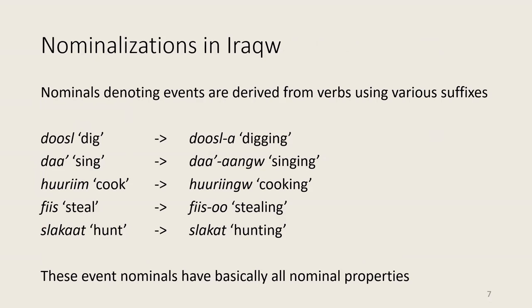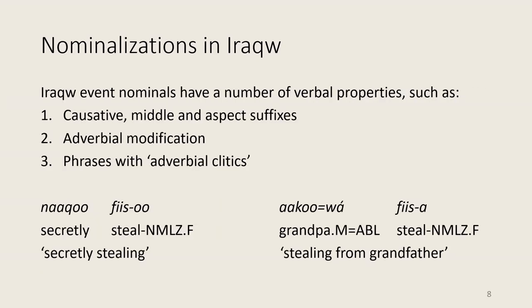So what about nominalizations? In Iraku, you can derive nominals from verbs using various different suffixes. For example, from 'dos,' which means 'dig,' you can derive the noun 'digging' with the suffix, giving 'dosa.' And from 'da,' which means 'sing,' you can get a different suffix and so forth. The resulting event nominals generally have all nominal properties: they can be used as arguments of verbs, and they can be nominal modifiers. They also have a number of verbal properties, including causative, middle, and aspect suffixes — derivational suffixes found on verbs — which can also be present in event nominals.